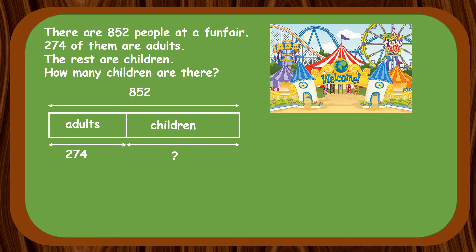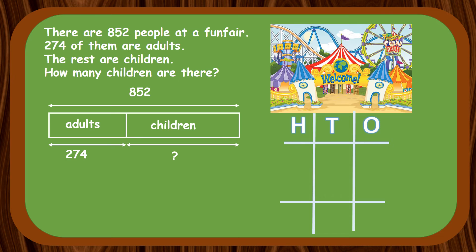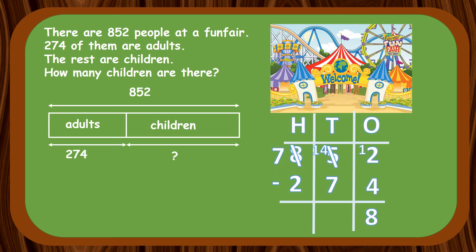Let's do the subtraction together. We first do the 1's place: 2 minus 4 — 2 is smaller than 4, so we need to transfer 1 ten. Now we have 12 minus 4, which gives us 8. Now the 10's place: remember we transferred 1 ten to the 1's place, so we're left with 4 instead of 5. 4 minus 7 — 4 is smaller than 7, so we need to transfer from the 100's place. Now 14 minus 7 gives us 7. Finally, 7 minus 2 is 5. So the answer is there are 578 children.